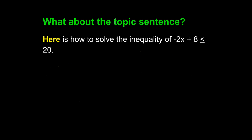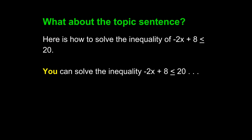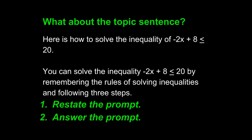The topic sentence right now uses 'here' as a sentence subject, which is unclear. We want to revise it with 'you.' So we can write: you can solve the inequality of negative 2x plus 8 is less than or equal to 20. This is a strong subject that helps us restate the prompt. The math teacher knows from the first moment of your paragraph that you are focusing on the prompt itself. We must also answer the prompt in the topic sentence. A complete revision: 'You can solve the inequality negative 2x plus 8 is less than or equal to 20 by remembering the rules of solving inequalities and following three steps.' Adding 'three steps' is enough to show that you are answering the prompt — you do not need excessive details in the topic sentence.